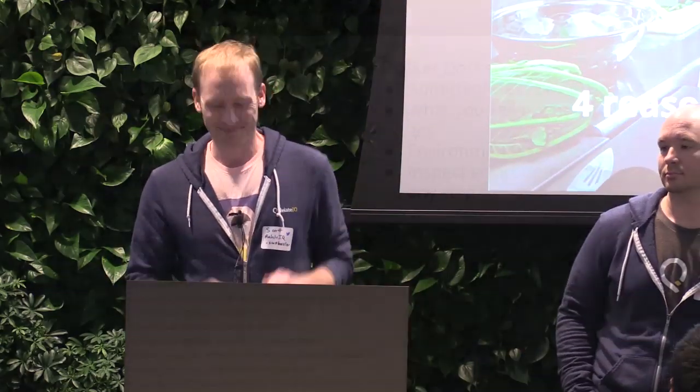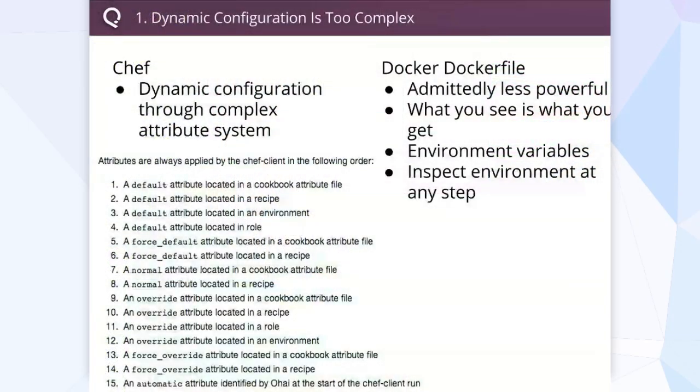It says 'replace,' but it's really replacing parts of Chef — Docker doesn't do everything Chef does at this point. Here are four things we think Docker does better, at least for us. First: dynamic configuration. Chef is all about configuration, and as such it has an extremely complex configuration system — the ability to create attributes you can override in 15 different ways, literally.